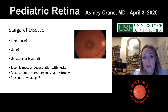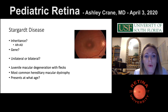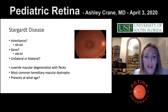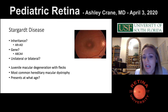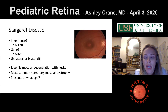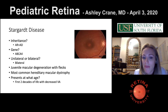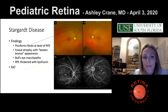Stargardt's disease — what's the inheritance? Autosomal recessive or dominant. The gene is ABCA4, a very highly tested question. It is bilateral. This is the juvenile macular degeneration with flecks. It is the most common hereditary macular dystrophy, presenting in the first two decades of life with decreased central vision. The pathognomonic finding is pisciform flecks.